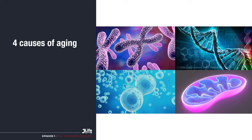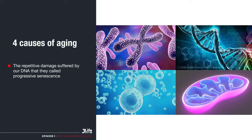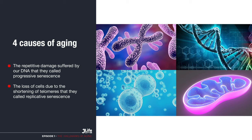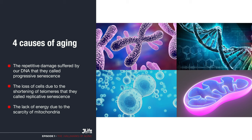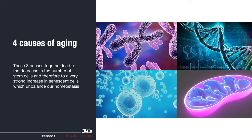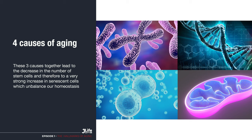Twenty years ago, when I started to be interested in human longevity, scientists considered that there were four main causes of aging: the repetitive damage suffered by DNA, which they called progressive senescence; the loss of cells due to the shortening of telomeres, which they called replicative senescence. These three causes combined, leading to the scarcity of stem cells and a very large increase in senescent cells, which imbalance our homeostasis — that is to say, our ability to adapt.